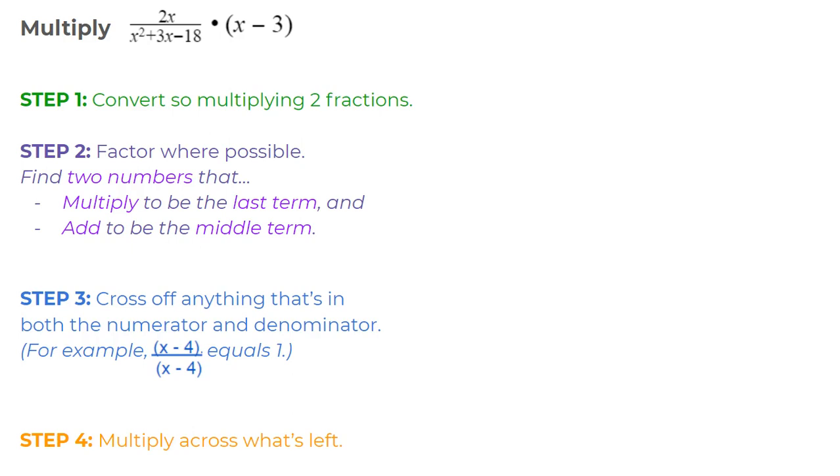So our first step is to convert x minus 3 to a fraction. And we can change any number to a fraction by just dividing by 1.